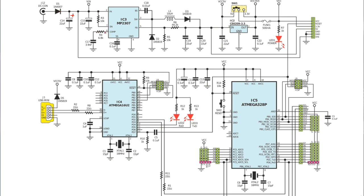Here we have another resistor R4 with 6.8 kilohms, and another capacitor C17 with 3.9 nanofarads. This capacitor is not a polarized type — it is a standard capacitor, specifically a ceramic capacitor.